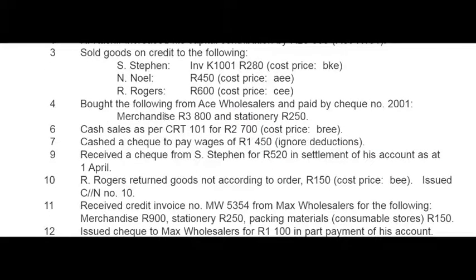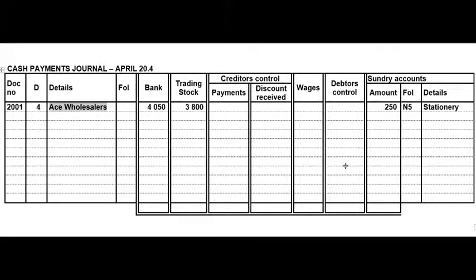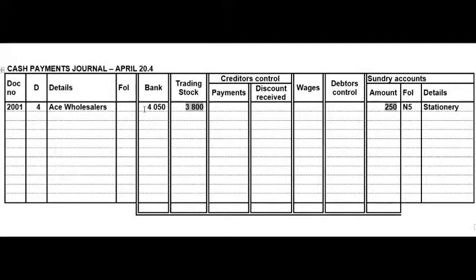On the 4th we bought merchandise and stationery from Ace Wholesalers and paid by cheque — these words indicate a CPJ transaction. The cheque number was 2001. Ace Wholesalers is not a creditor so leave the folio column blank. The total value of the cheque goes to bank, and the separate values go to trading stock and stationery. To get the bank value: 3800 plus 215 equals 4015.